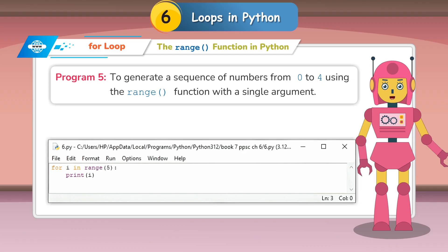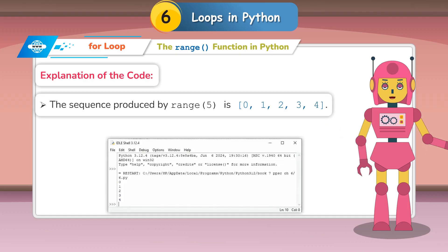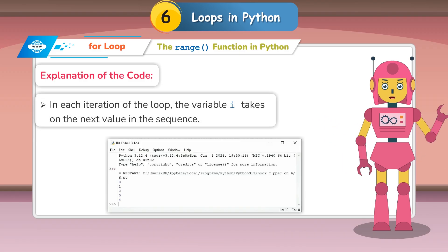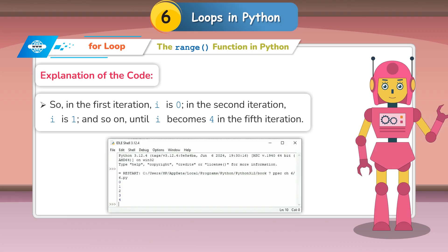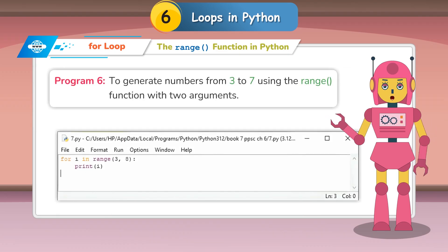Program 5: To generate a sequence of numbers from 0 to 4 using the range function with a single argument. The sequence produced by range(5) is 0, 1, 2, 3, 4. In each iteration, the variable i takes on the next value — in the first iteration i is 0, in the second i is 1, and so on until i becomes 4 in the fifth iteration. After running the program, the output is displayed as follows.